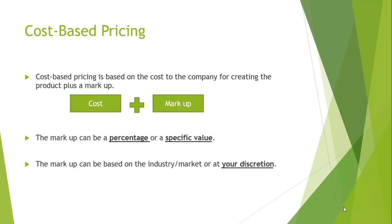Now, there are a couple of different ways we can price our products. One aspect is called cost-based pricing. Cost-based pricing is based on the cost to the company for creating the product plus a markup. The markup can either be a percentage — such as 40%, 100%, or 20% — or it can be a specific value such as $20, $100, or $1,000.